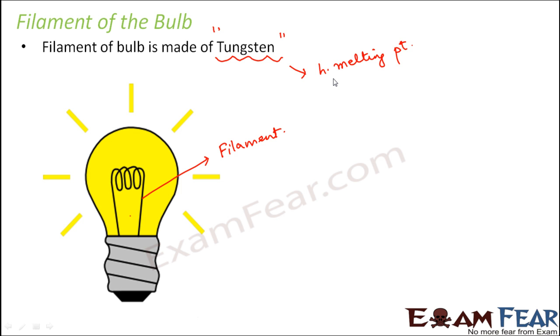Melting point means the point or the temperature at which any substance starts melting. Now since this metal has very high melting point, it will not melt easily. So even if we heat it to a very high temperature, it doesn't melt. It doesn't melt but it starts glowing, it starts producing light. And that's how we receive light.